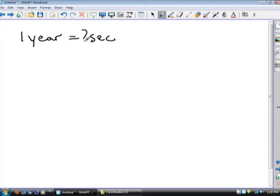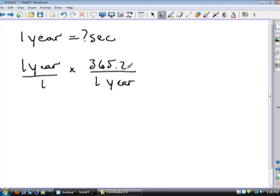We would just say we have one year times, we want years to cancel. So we'll put one year on the bottom. And on top we know that there's 365.24 days in one year. The years cancel.